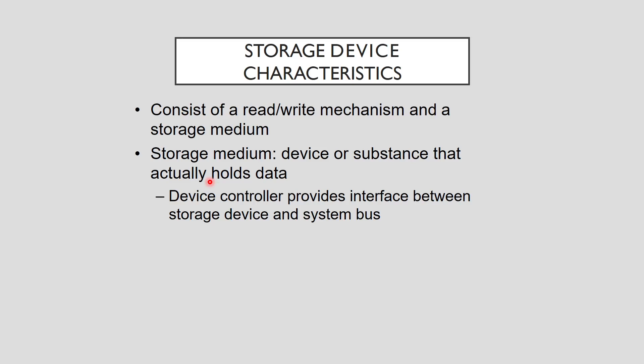In some storage devices, the read or write mechanism and storage medium are a single unit using the same technology. For example, most types of primary storage use electrical circuits implemented with semiconductors for both. In other storage devices, the read or write mechanism and the storage medium use fundamentally different technologies. For example, tape drives use an electromechanical device for the read and write mechanism and a magnetic storage medium composed of polymers and metal oxides.